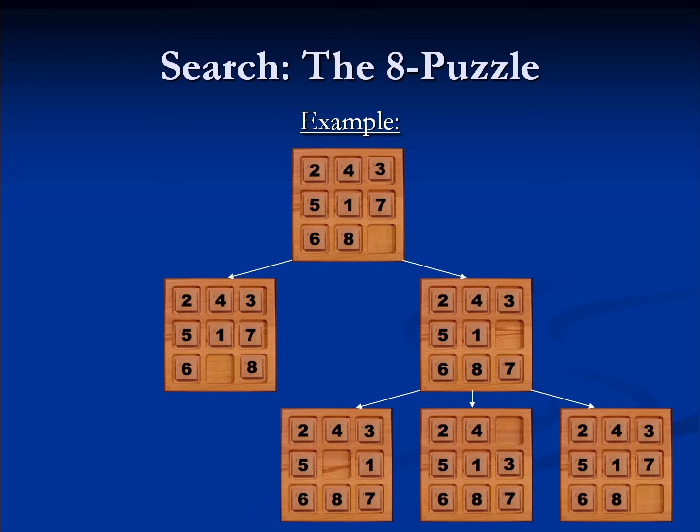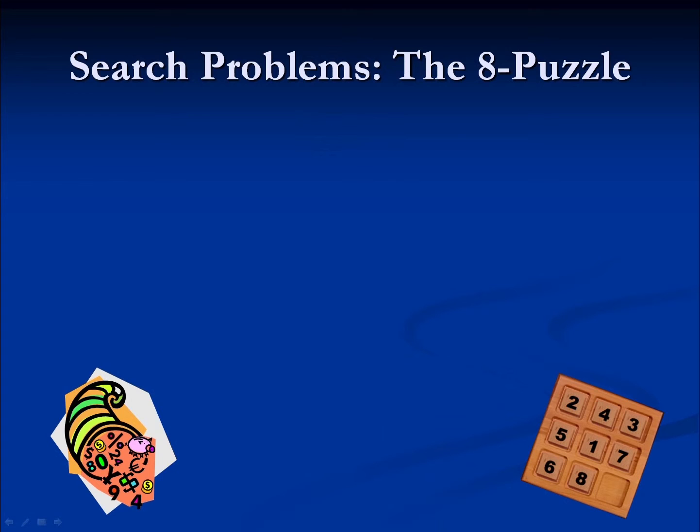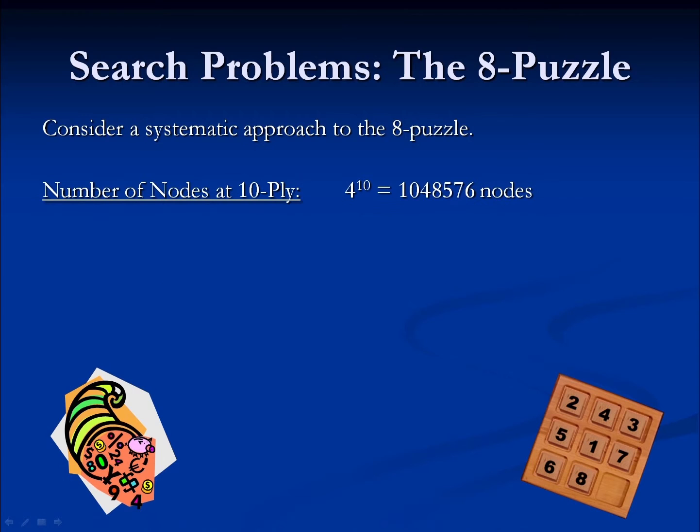But there are problems with the naive version of this approach to search. Consider this: if we take ten steps — if we move ten tiles around, if we go to a depth of ten or ten ply on the tree — that will take us to about 4 to the 10 nodes, because there are four potential steps at each location.